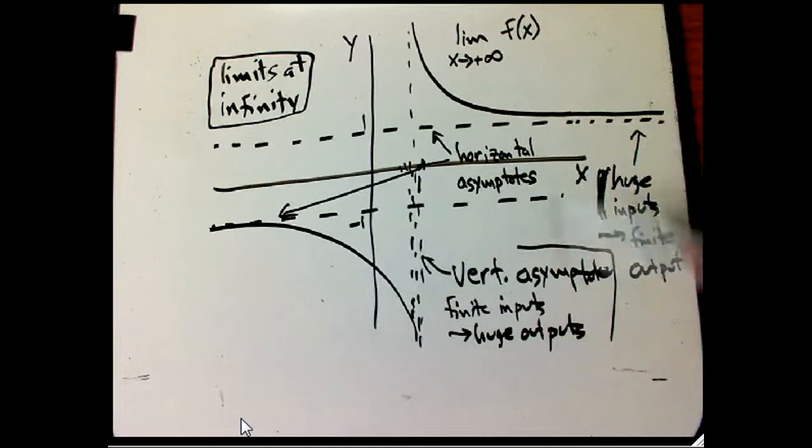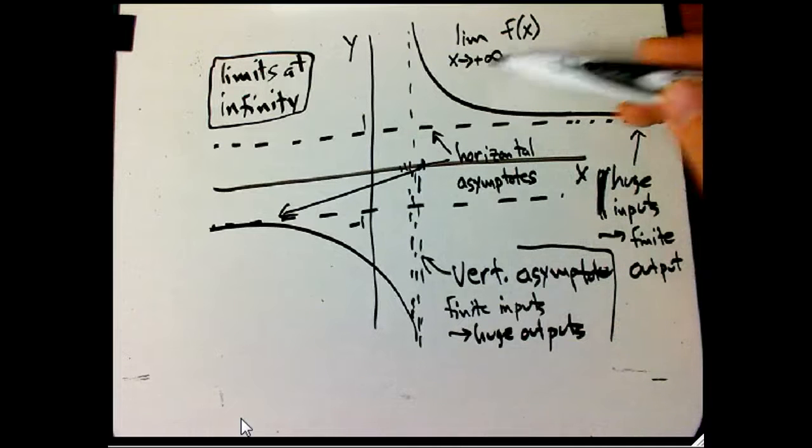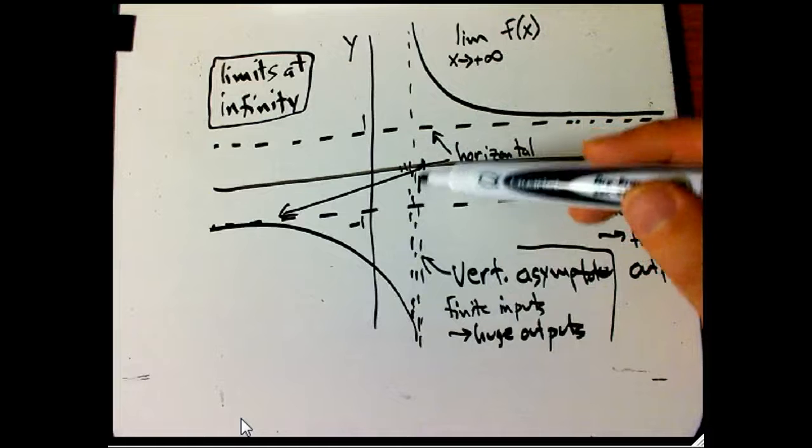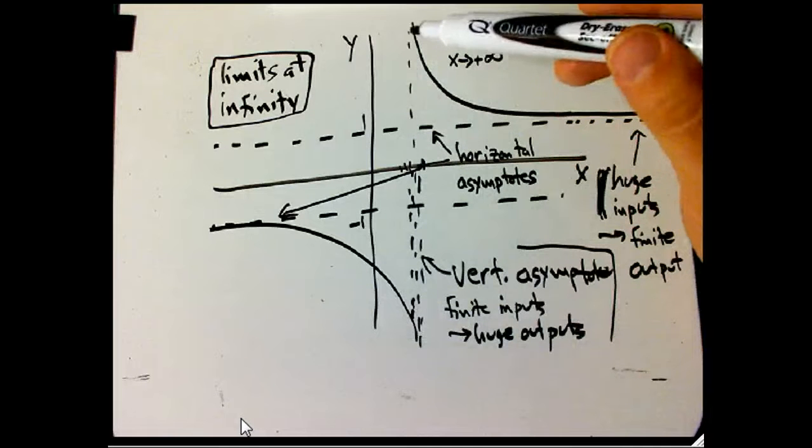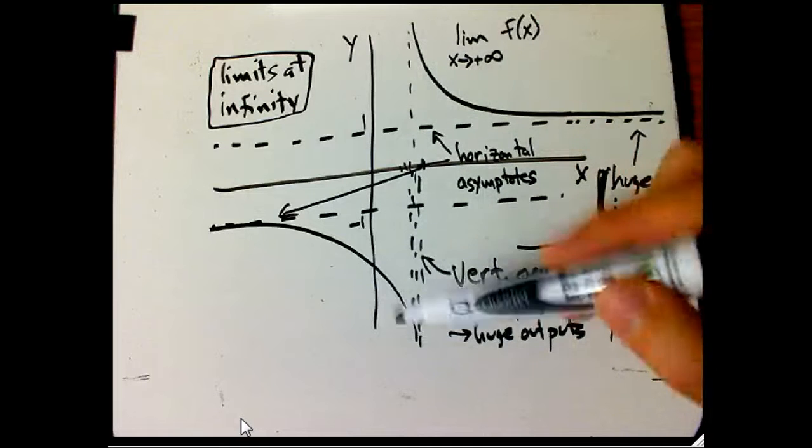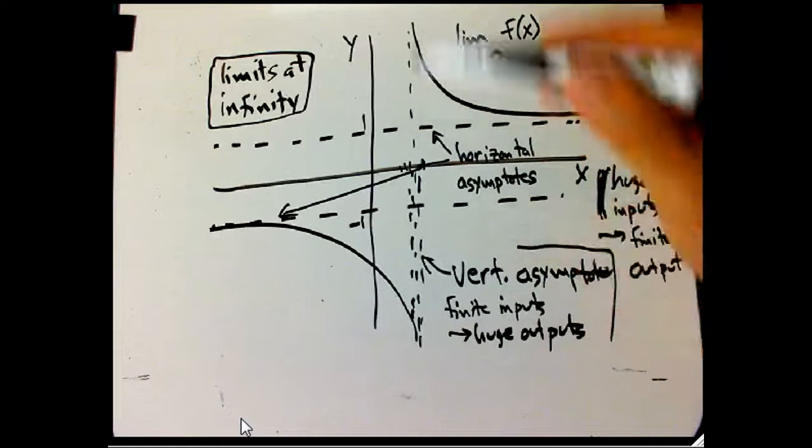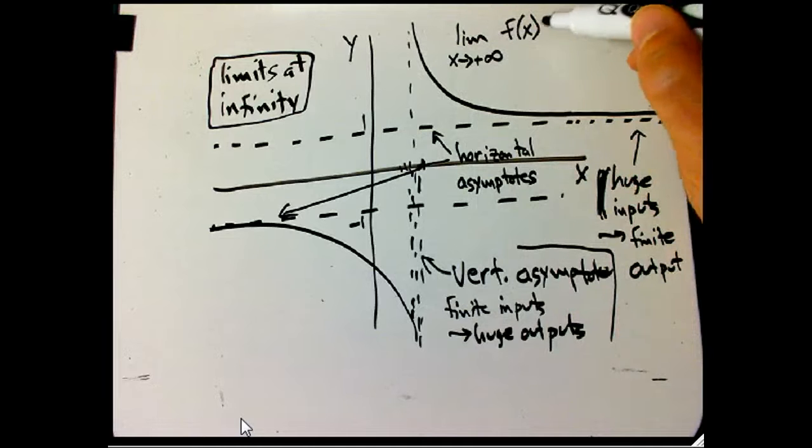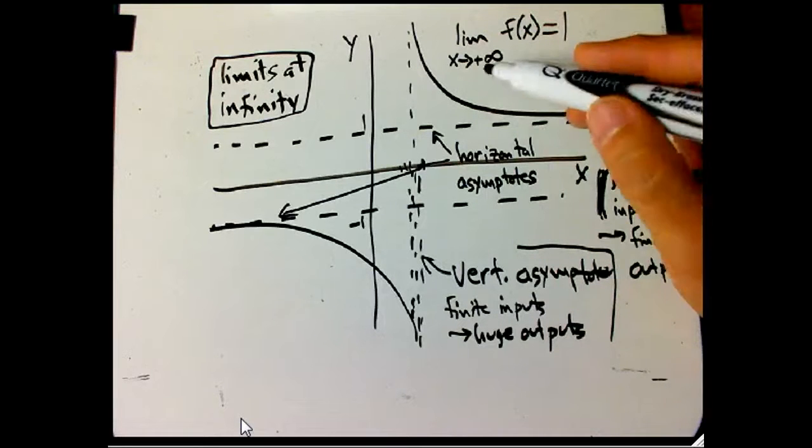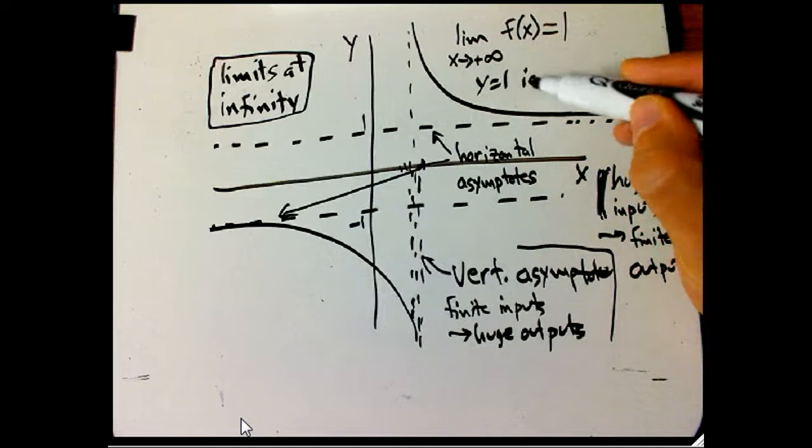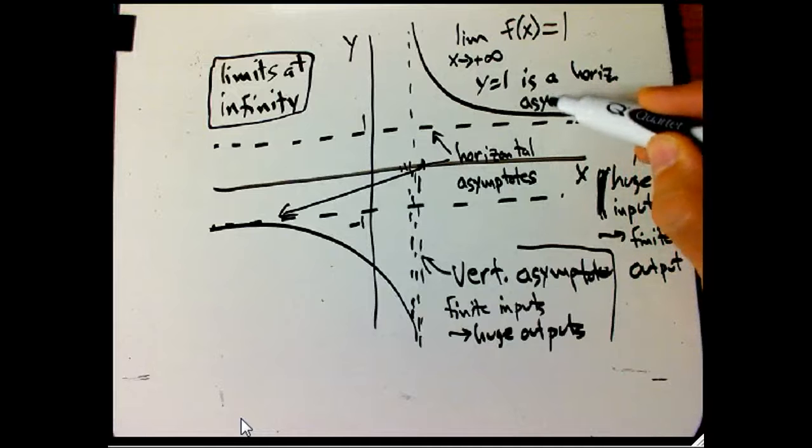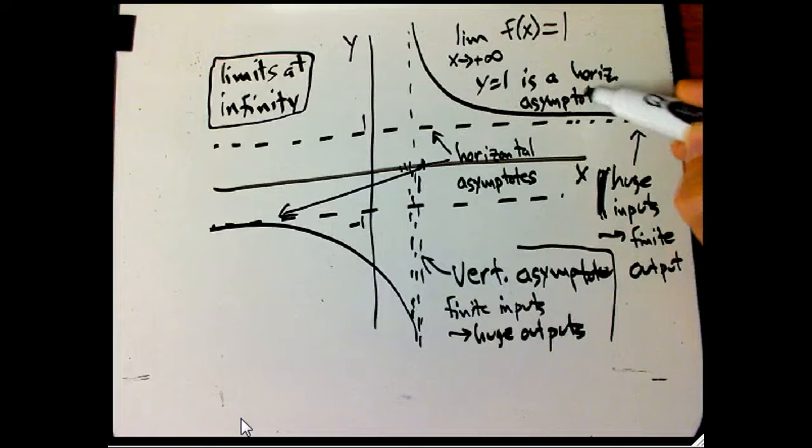So this is a very big difference between vertical asymptotes and horizontal. We put the infinity in here. Here we would take the limit as x goes to 1, and we would discover willy-nilly that the output is blowing up to plus or minus infinity. And so the infinity would come in as the answer to the problem. Here it comes in as our input to the problem. The limit as x goes to plus infinity of f of x equals, in this case, 1. That's that y value. That says that y equals 1 is a horizontal asymptote.